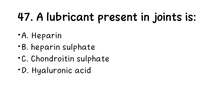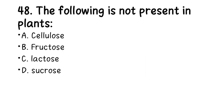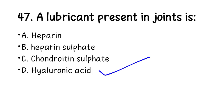Number 47. A lubricant present in joints is: A. Heparin, B. Heparin sulfate, C. Chondroitin sulfate, D. Hyaluronic acid. The right answer is D, hyaluronic acid. If they ask you what the lubricant in joints is, be careful to choose hyaluronic acid.